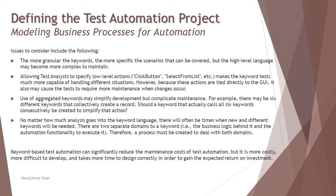No matter how much analysis goes into keyword language, there will often be times when new and different keywords will be needed. There are two separate domains to a keyword — the business logic behind it and the automation functionality to execute it. Therefore, a process must be created to deal with both domains, being prepared for on-the-go requirements, and making sure that new requirements for such keywords are well defined.